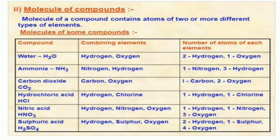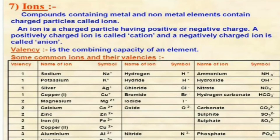Sulfuric acid H₂SO₄ has two hydrogen atoms, one sulfur atom, and four oxygen atoms combining, so the total number of atoms in one sulfuric acid molecule is seven. Next are ions — ions are charged particles. Compounds containing metals and non-metals contain charged particles called ions. Ions can be positively charged or negatively charged, formed by gain or loss of electrons. When an element gains electrons, it becomes a negatively charged ion called an anion; when it loses electrons, it becomes a positively charged ion called a cation.